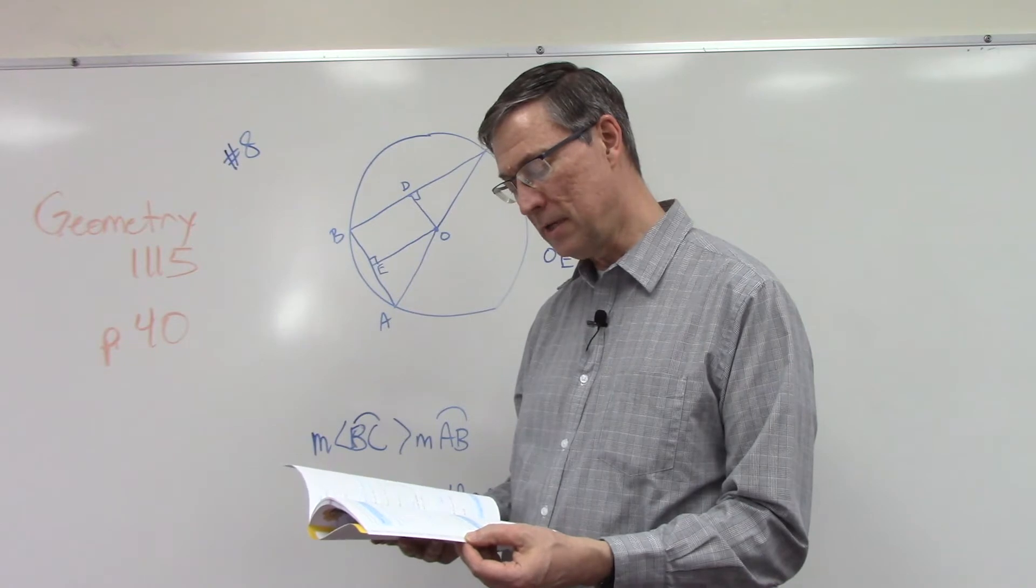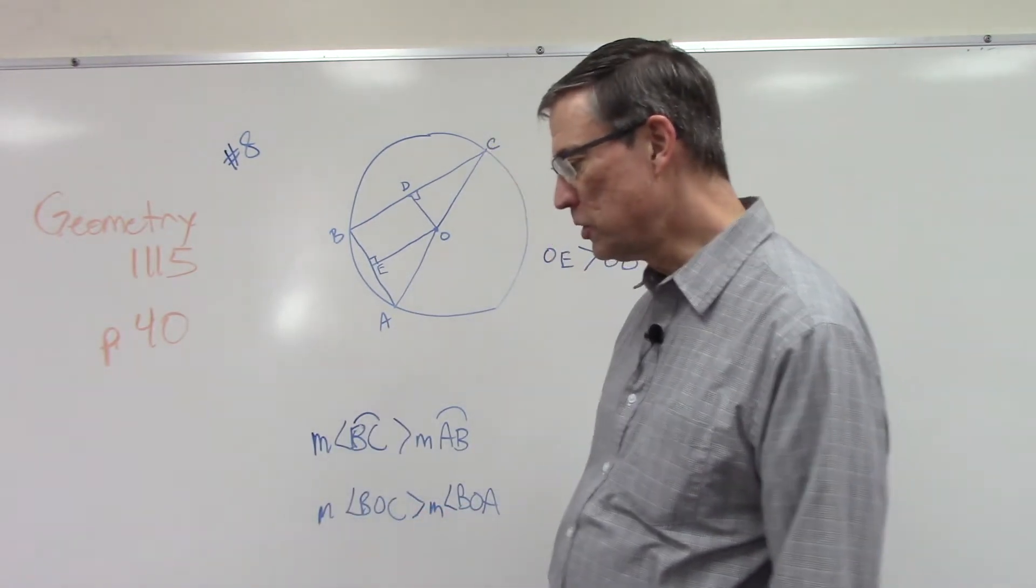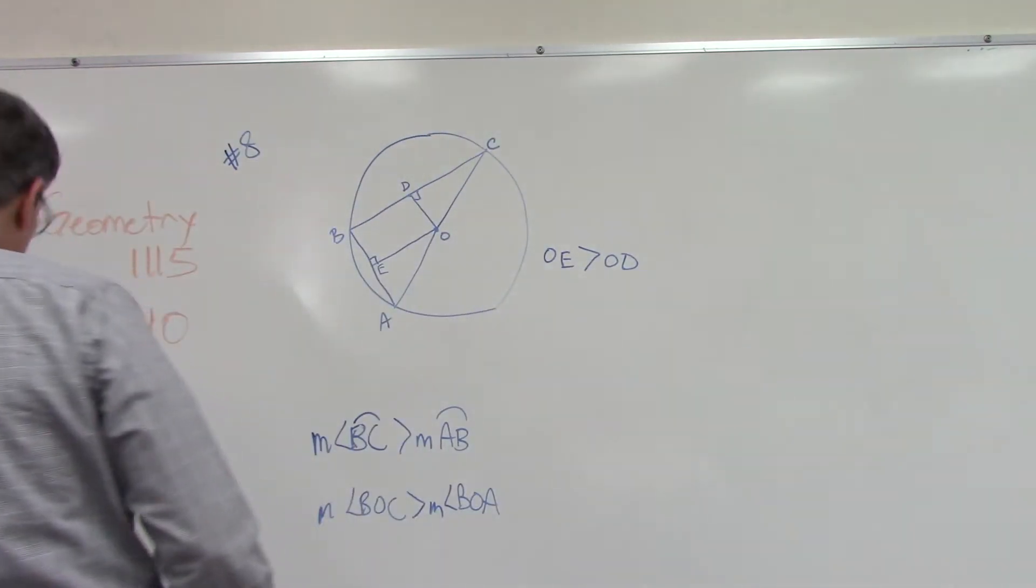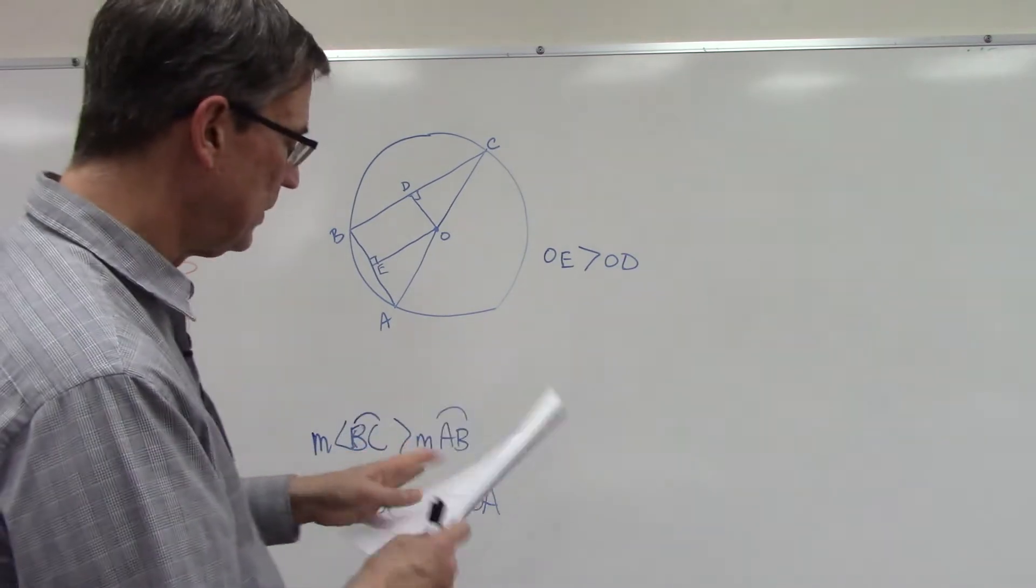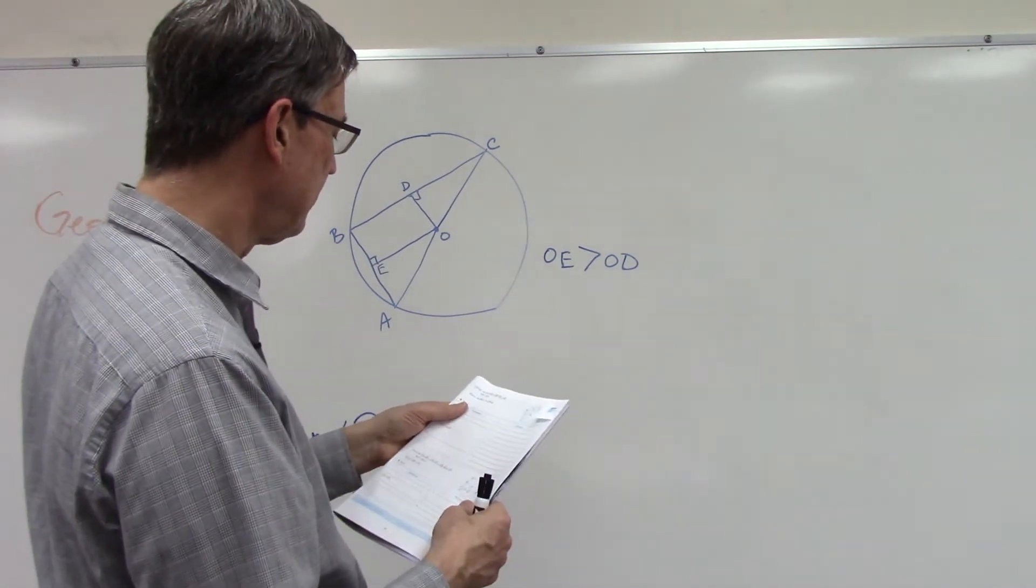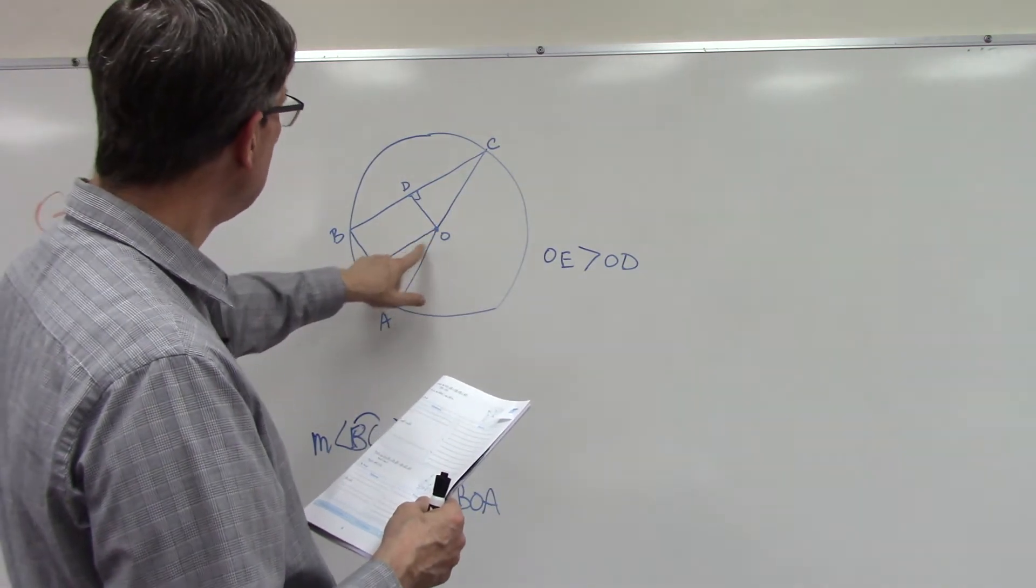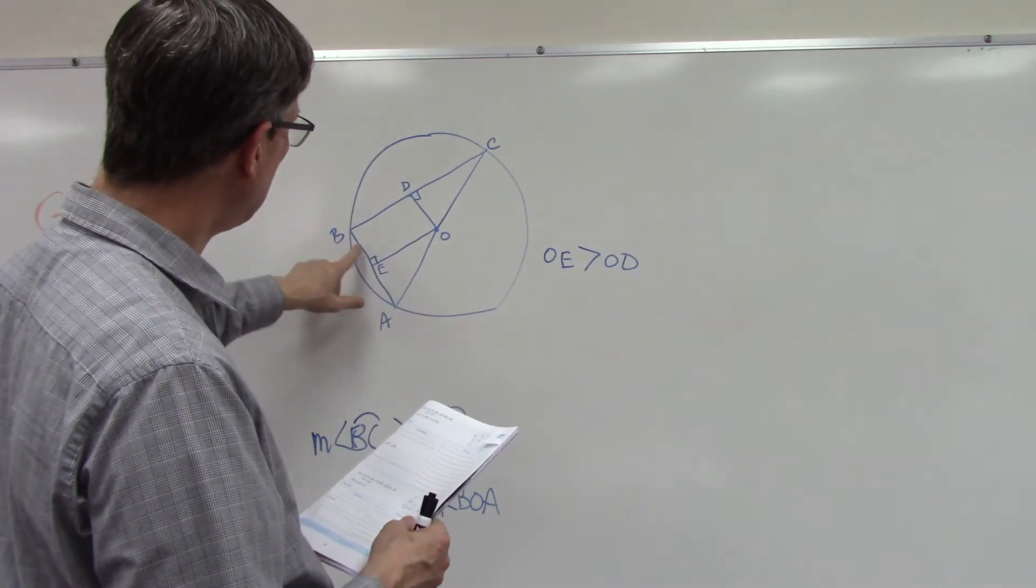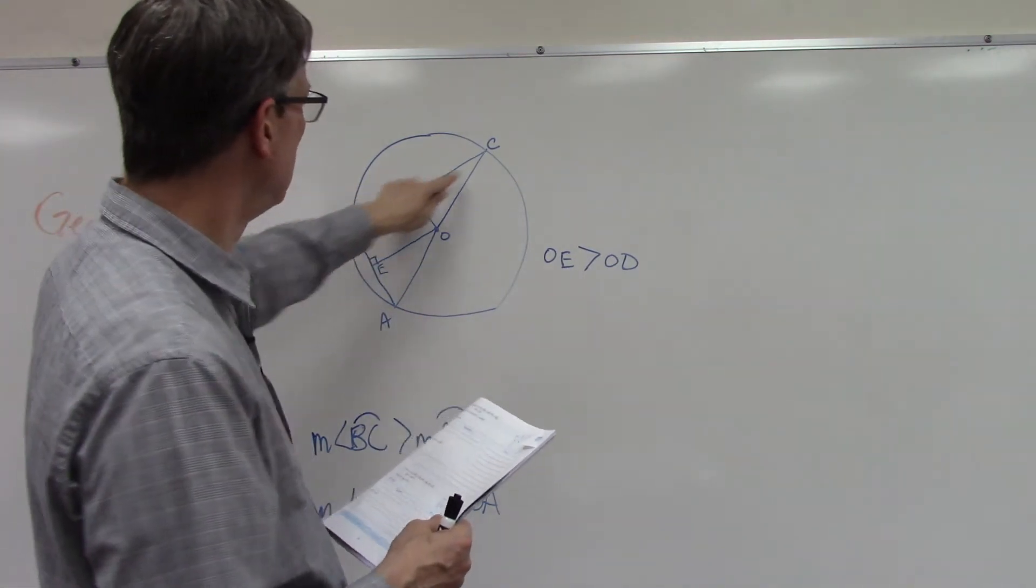It helps to study the givens. They tell us we have circle O, OE is perpendicular to BA, and OD is perpendicular to BC.